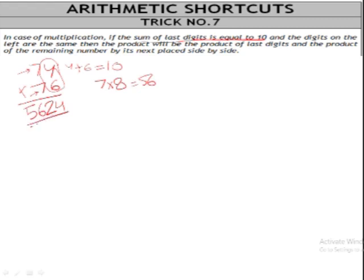Let's do another example: 87 times 83. It's also the same case because 7 plus 3 gives you 10. So here we have to write 7 times 3, that is 21, and 8 multiply by the next number. What comes next? 9. 8 times 9 is 72.